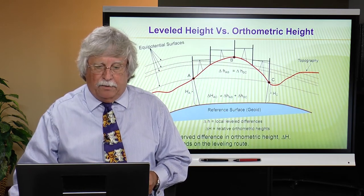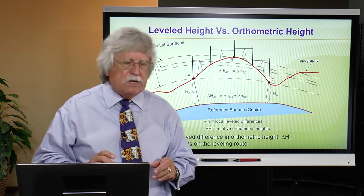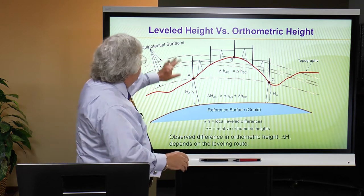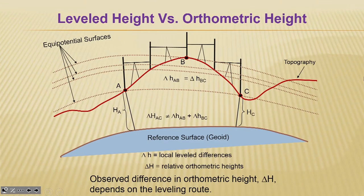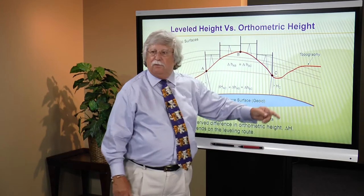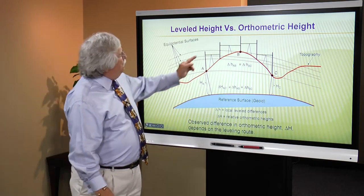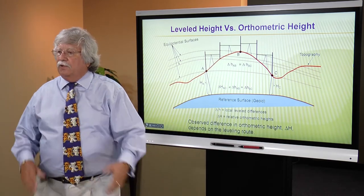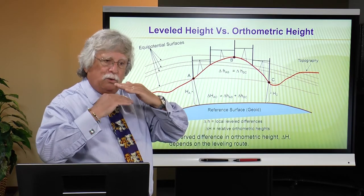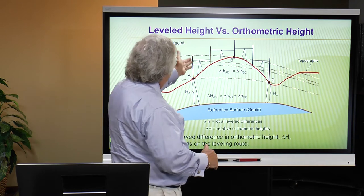All these equal potential surfaces — notice they are not parallel. Here's my reference surface, calling it the surface of the geoid — you can think of it as the surface of NAVD88. I have two points, A and C, that are on the same equal potential surface, meaning water does not flow between the two of them. As I level up and over this mountain or hill, the gravity field is changing and these equal potential surfaces are no longer parallel.